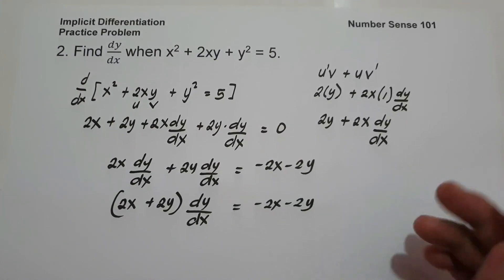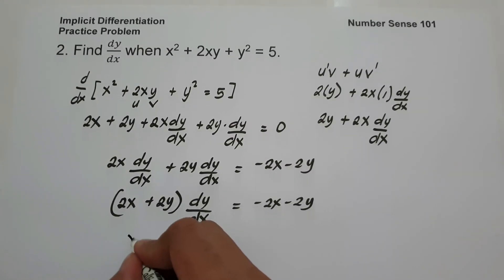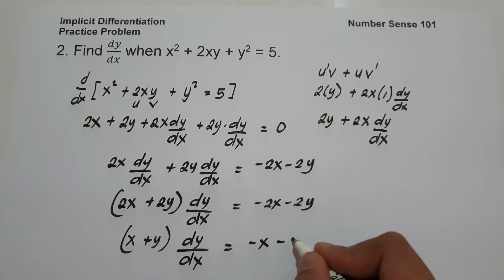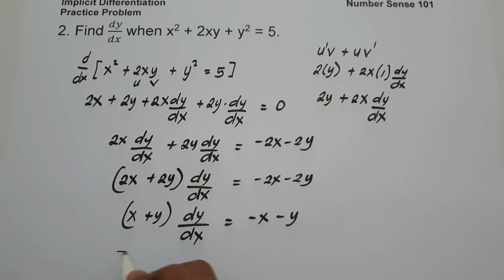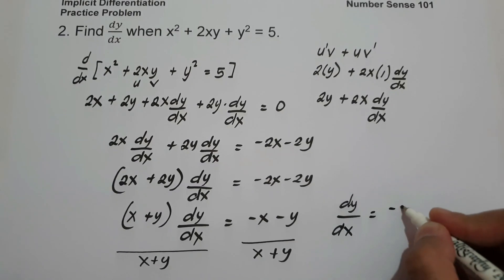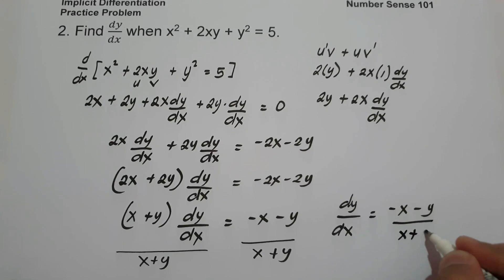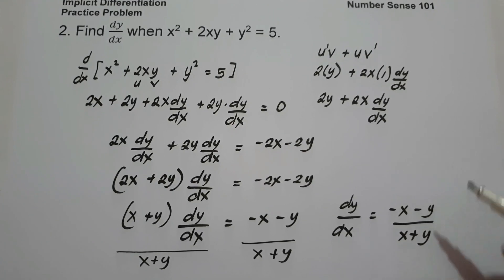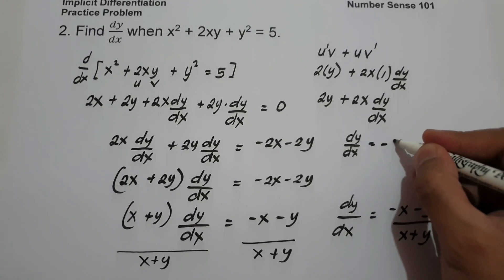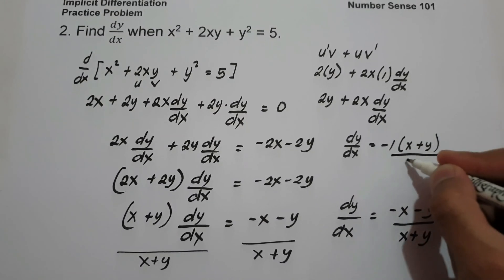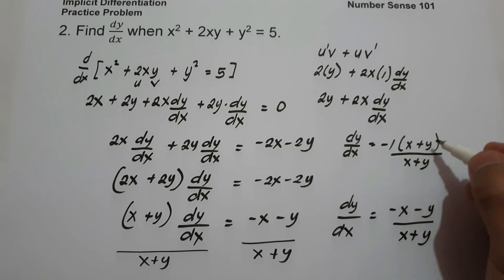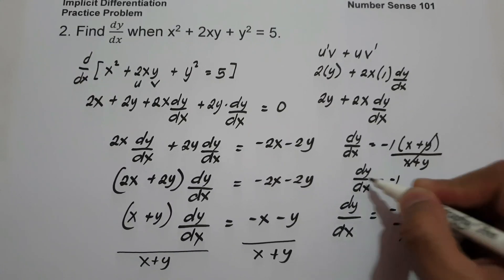We can simplify our equation by dividing the whole equation by 2, giving us x plus y times dy over dx equals negative x minus y. Then divide the whole equation by x plus y. The value of dy over dx is negative x minus y over x plus y. The greatest common factor of negative x and negative y is negative 1, so we factor: negative 1 times (x plus y) over (x plus y). The (x plus y) terms cancel, so dy over dx equals negative 1. And this will be our answer.